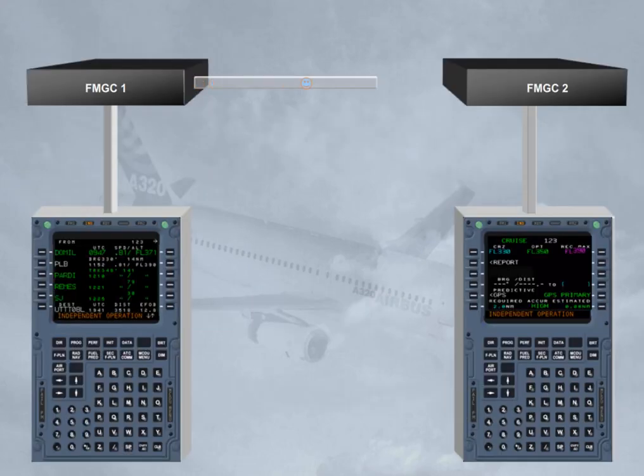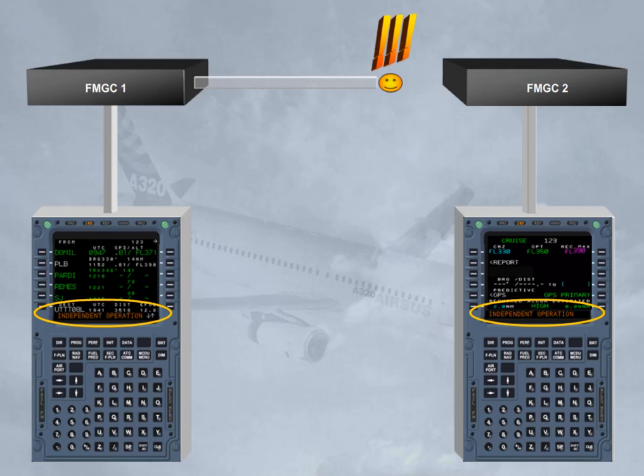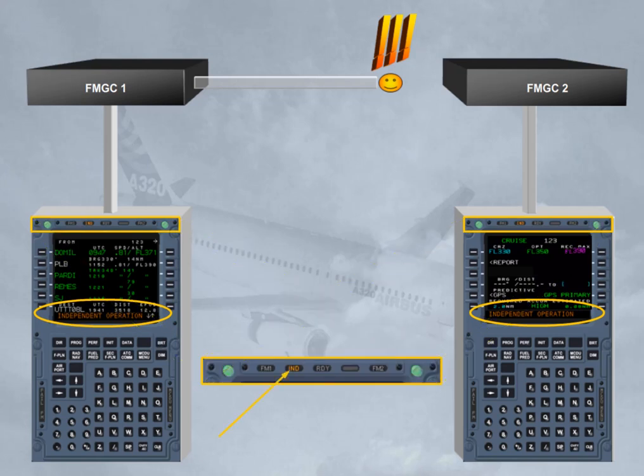If the cross-talk is lost between both FMGCs, each FMGC operates independently. This mode of operation is called independent mode. The crew is advised by a message on the scratchpad: independent operation. Notice the independent amber light on each MCDU, which indicates that the on-side FM has detected an independent mode of operation.